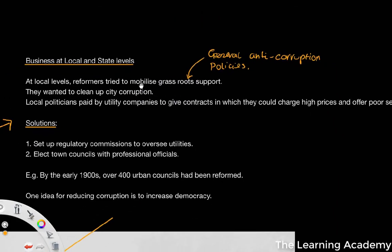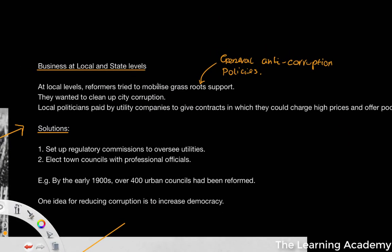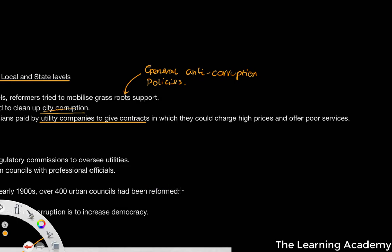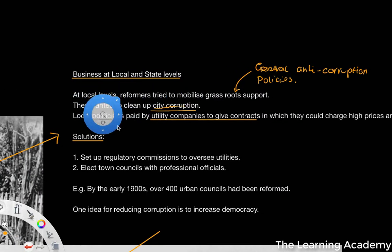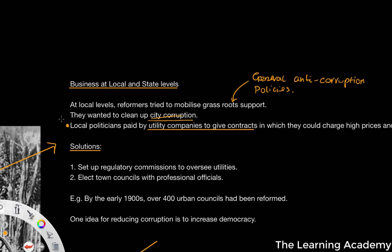By grassroots support, we mean individuals at the bottom of the chain in politics — individuals at local levels and even a little higher at state levels — trying to mobilise support for general anti-corruption policies. They wanted to clean up city corruption within America. Local politicians paid by utility companies to give contracts, charging high prices and offering poor services — these local politicians were effectively corrupt, and these are the people that were campaigned against.